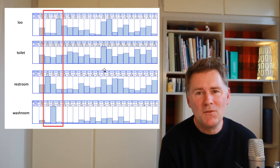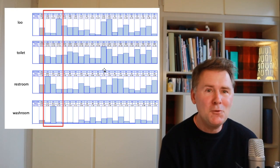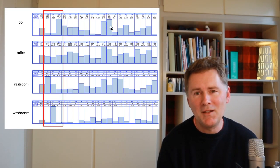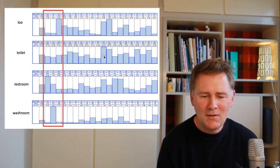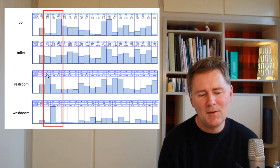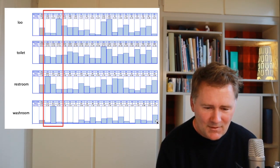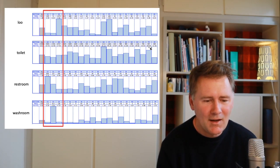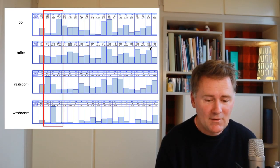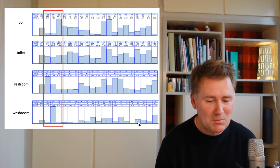Some of you would have known that 'loo' is a decidedly British term. But the Globe gives additional information — namely that 'loo' is also current in Singapore and Malaysian English. Interestingly, 'toilet' is more evenly distributed. Then 'restroom' is something of an Americanism, and 'washroom' is what you say in Canada. You can look at the outer circle varieties and see if they pattern more with the British model, the American model, or something else entirely.